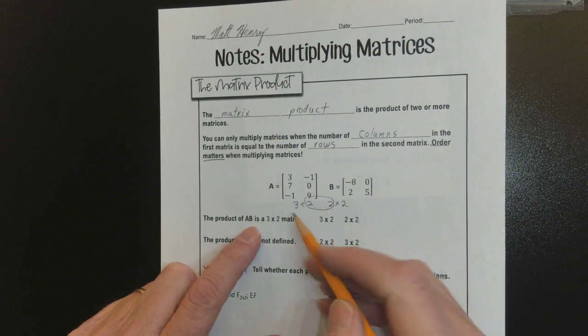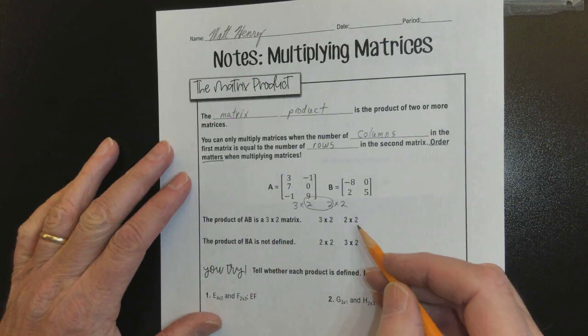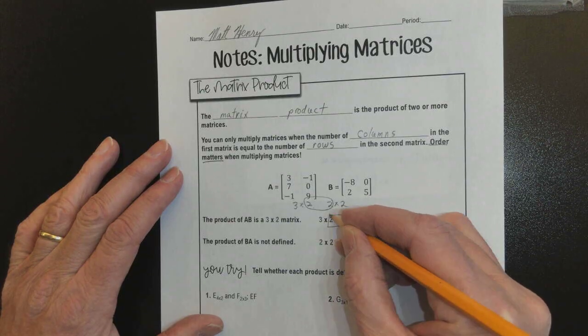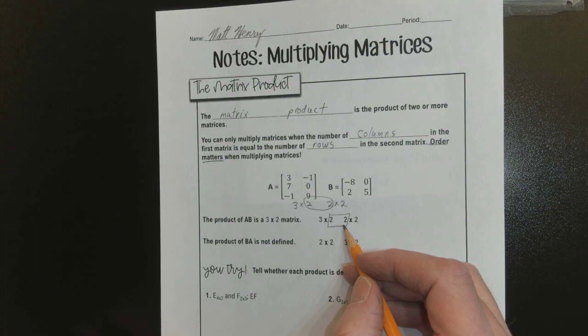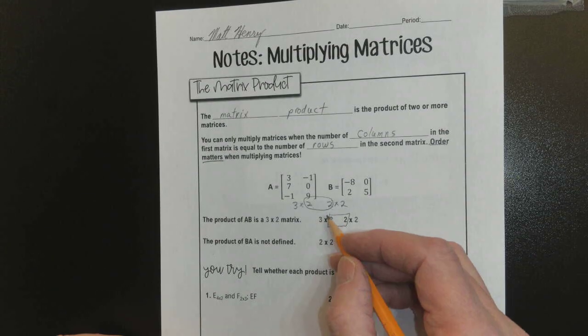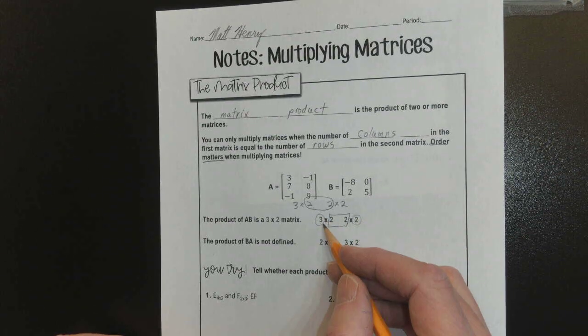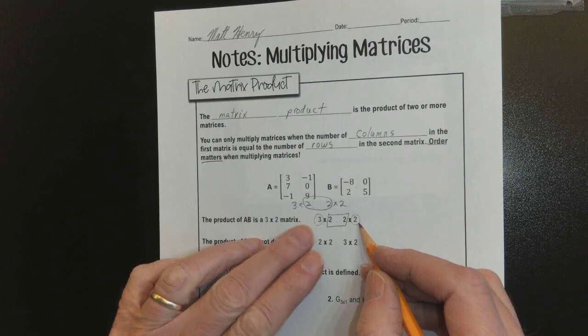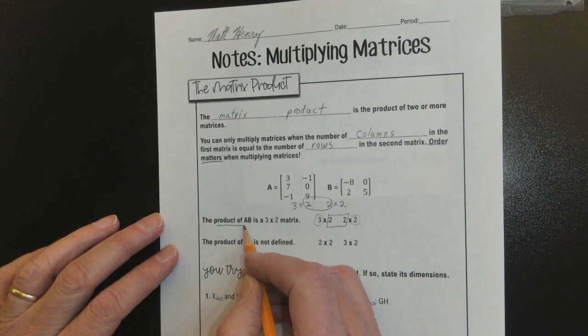So, AB is a 3 by 2 times a 2 by 2 matrix. The final result, and this says this here, but I just want to show you. If you look at that and see that those are the same, the final result is going to be a 3 by 2 matrix. So, the inner dimensions need to match. They need to be the same if we can multiply. The outer dimensions, if that happens, will be the size of the product matrix.